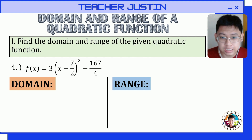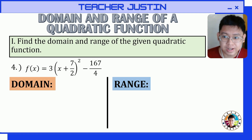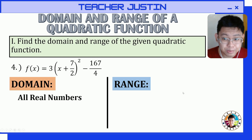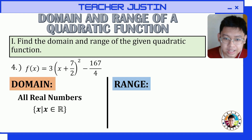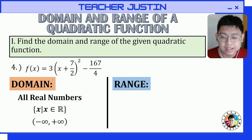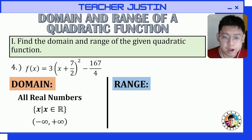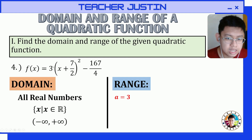Let's find the domain and range of this quadratic function written in vertex form. Finding the domain is very simple — for all quadratic functions, the domain will always be all real numbers. So: x such that x is an element of all real numbers, or in interval form from negative infinity to positive infinity. For the range, it will be based on the orientation of the graph. We need to get the value of a, which is 3 — the coefficient of the squared group.